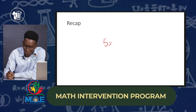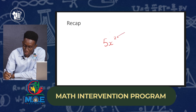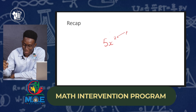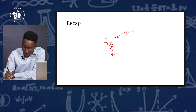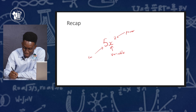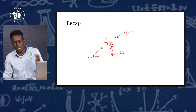So let's do a brief recap on the parts of an algebraic expression. Let's say we had the term 5x raised to the second power. This small number at the top is called the power. The x is called the variable. And the 5 is called the coefficient. These are the parts of the algebraic term.